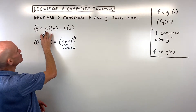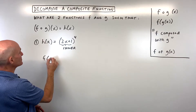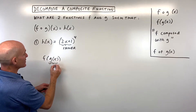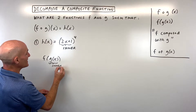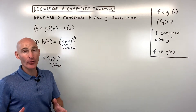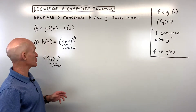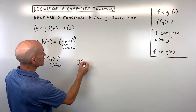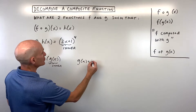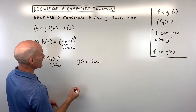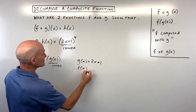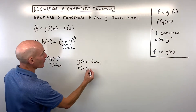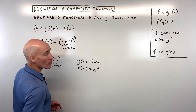When you look at the notation f of g of x, g of x is our inner function — it's what we're putting into the outer shell, or the outer function. So in this case, I would say g of x is equal to 2x plus 1, whereas f of x, the outer function, is this quantity to the fourth power — so f of x equals x to the fourth power.